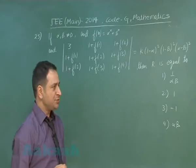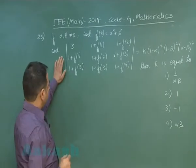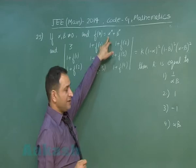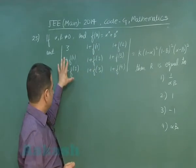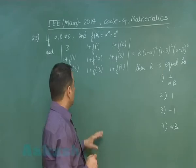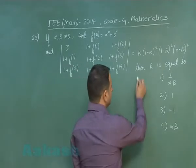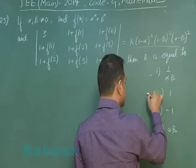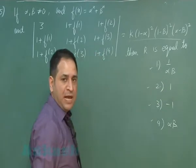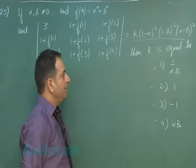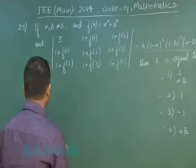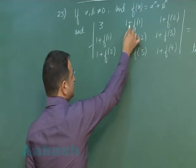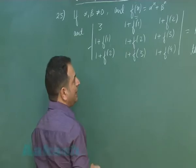Moving to problem number 25. This involves a complicated determinant where f(n) = α^n + β^n. The entire determinant is expressed in terms of f(1), f(2), etc., and equals k times (1 − α)^2·(1 − β)·(α − β)^2. We need to find k. Although this can be done by hit and trial, let us look for a logical explanation.